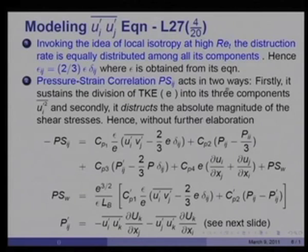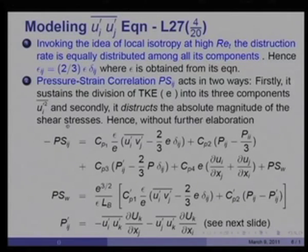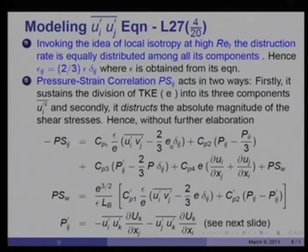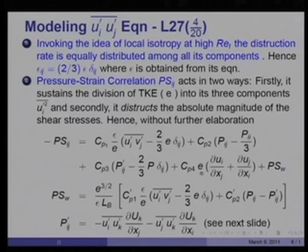The pressure-strain term acts in two ways: firstly it sustains the division of turbulent kinetic energy into its three components u_i², and secondly it destructs the absolute magnitude of the shear stresses — so it both redistributes and destructs. Without further elaboration, the final form of the pressure-strain model is: minus psi_ij equals a term involving (stress minus 2/3 * E * delta_ij), plus c_p2 times (production minus P_ii/3), plus c_p3 times (P′_ij minus 2/3*P*delta_ij), plus c_p4 times E*(du_i/dx_j + du_j/dx_i), plus a wall reflection term psi_w.